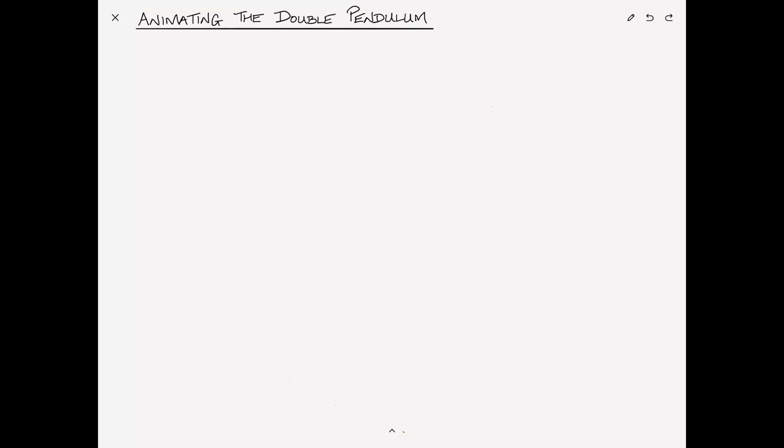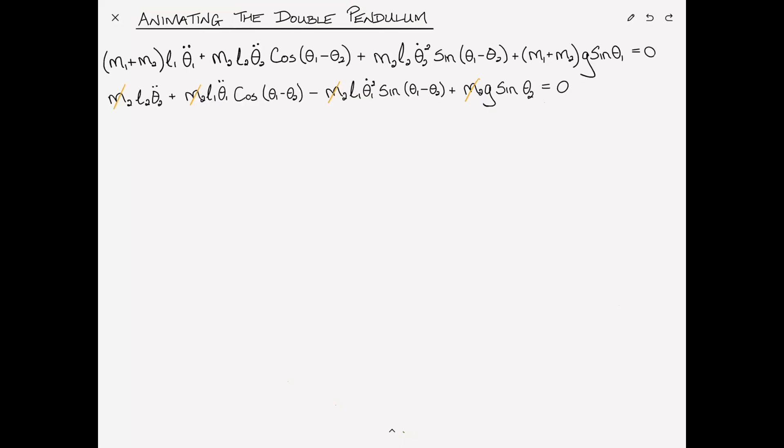The link to that previous video appears above, and in that video we came up with the following two governing equations for the double pendulum problem. This is just copied exactly from that video. We're going to number these equations 1 and 2. We had two angles, one for each of the pendulum bobs, theta 1 and theta 2 respectively, and these are the governing differential equations that we need to solve in order to find out the position theta as a function of time.